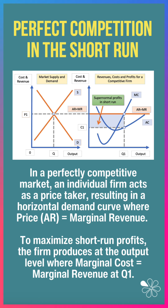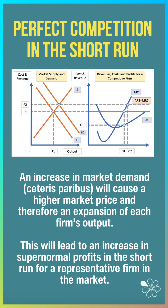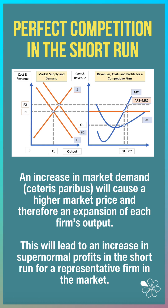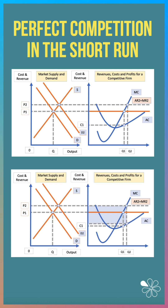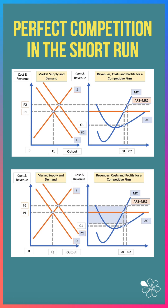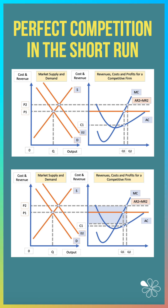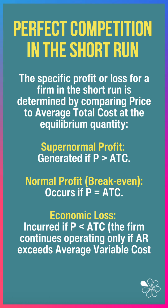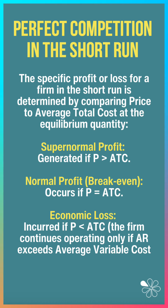The profits are shown by the blue shaded area above cost, so it's supernormal profit. This diagram shows the effect of an increase in market demand, ceteris paribus, which will cause a higher market price and therefore an expansion of each firm's output, leading to an increase in supernormal profits in the short run for a representative firm. Output goes up from q1 to q2 and the blue shaded area is now bigger.